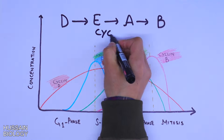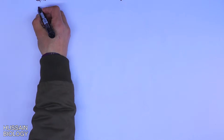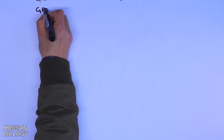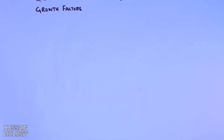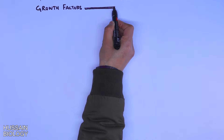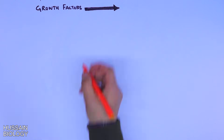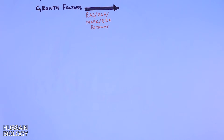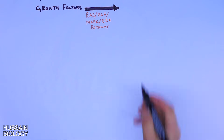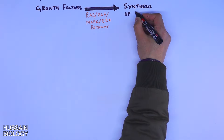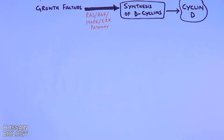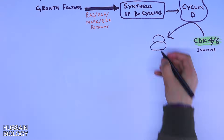Now let's look at the linear pathway of cell cycle regulation. When growth factors are present in the cell, they drive the Ras, Raf, or MAPK pathway. This pathway leads to the synthesis of cyclin D, which then interacts with CDK4 or CDK6 and makes them active.